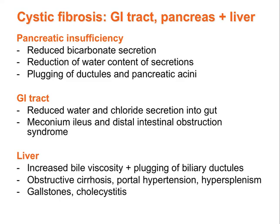Other features are seen in the gastrointestinal tract, pancreas and liver. 85% of patients have pancreatic insufficiency. There is reduced bicarbonate secretion which disturbs the optimal pH for pancreatic enzymes. There is reduction of water content of the secretions and plugging of ductules and pancreatic acini, and pancreatitis commonly occurs. In the gastrointestinal tract there is reduced water and chloride secretion into the duct. This can cause meconium ileus which occurs in the newborn phase and may be the presentation of cystic fibrosis. It can also lead to distal intestinal obstruction syndrome.